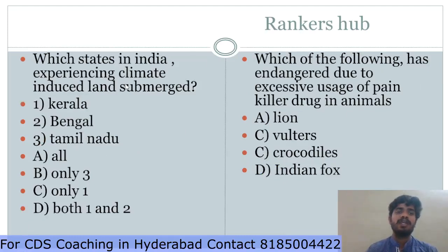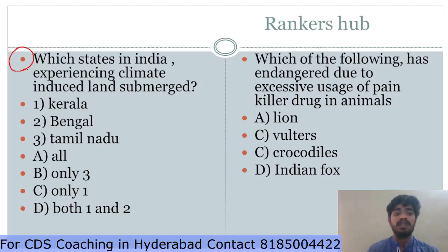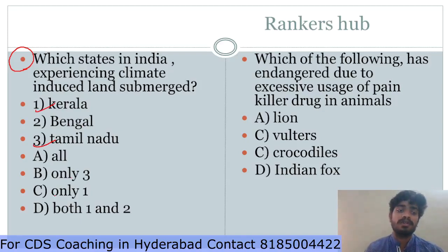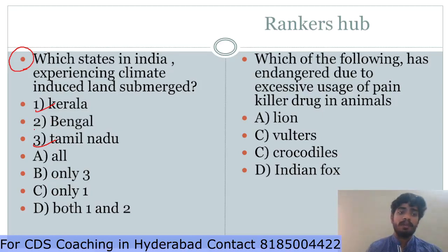Which states in India are experiencing climate-induced land submergence? This question is important — climate-related questions are compulsory in CDS. A recent Government of India scientific advisor report identified Kerala, Tamil Nadu, and West Bengal as experiencing coastal land submergence due to rising water levels and increased salinity. The answer is option A — Kerala, Tamil Nadu, and West Bengal.